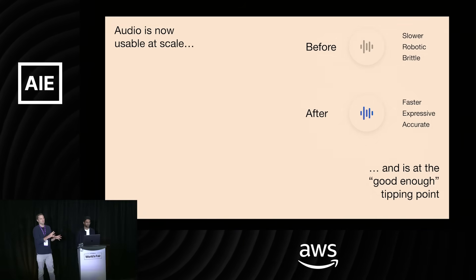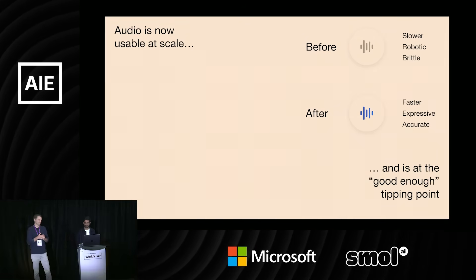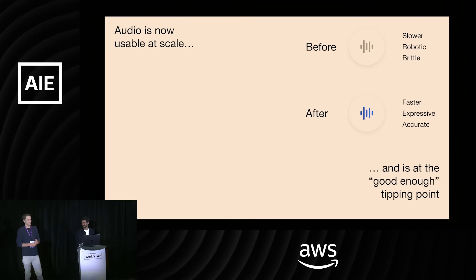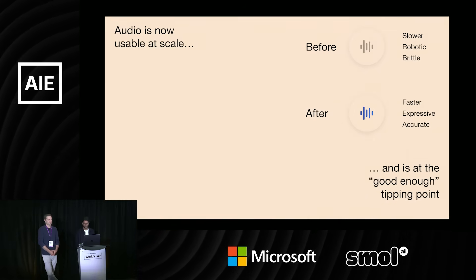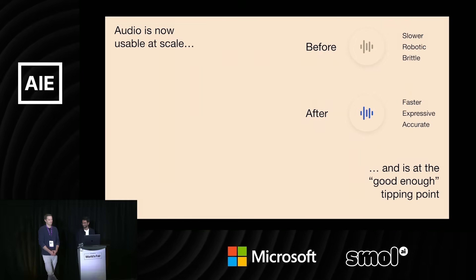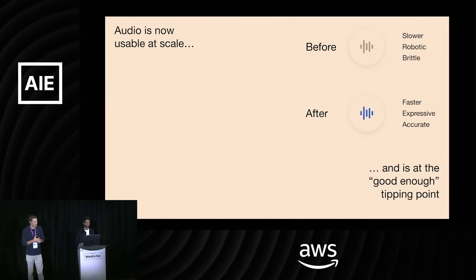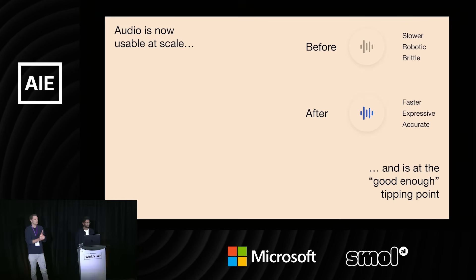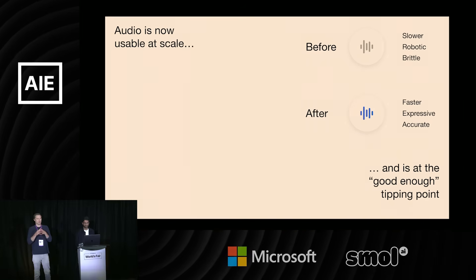I'll show an example. The first one will show what the models were like not even six months ago — it's a very painful example. [Demo plays: slow, robotic model interaction where user asks for a haiku about whispers, then tries to redirect to stars, but the model ignores the interruption and writes about sand instead.] You can see the initial delay. These models are incredibly slow, very robotic in how they sound, and quite brittle. In that example, we tried to interrupt the model and tell it not to write a poem about whispers but about stars — it wrote one about sand. That's actually where it was.